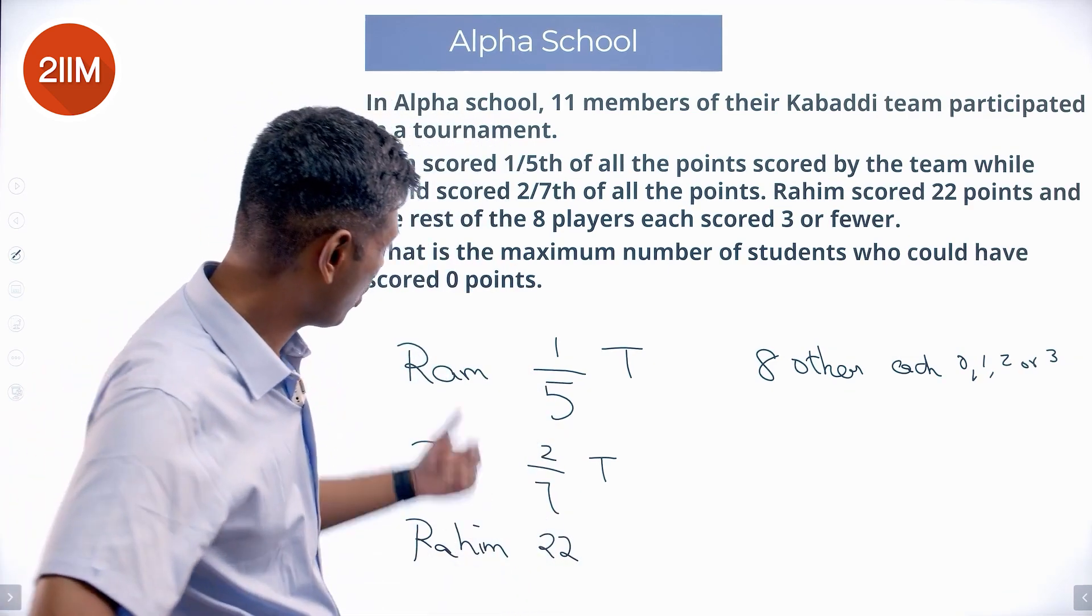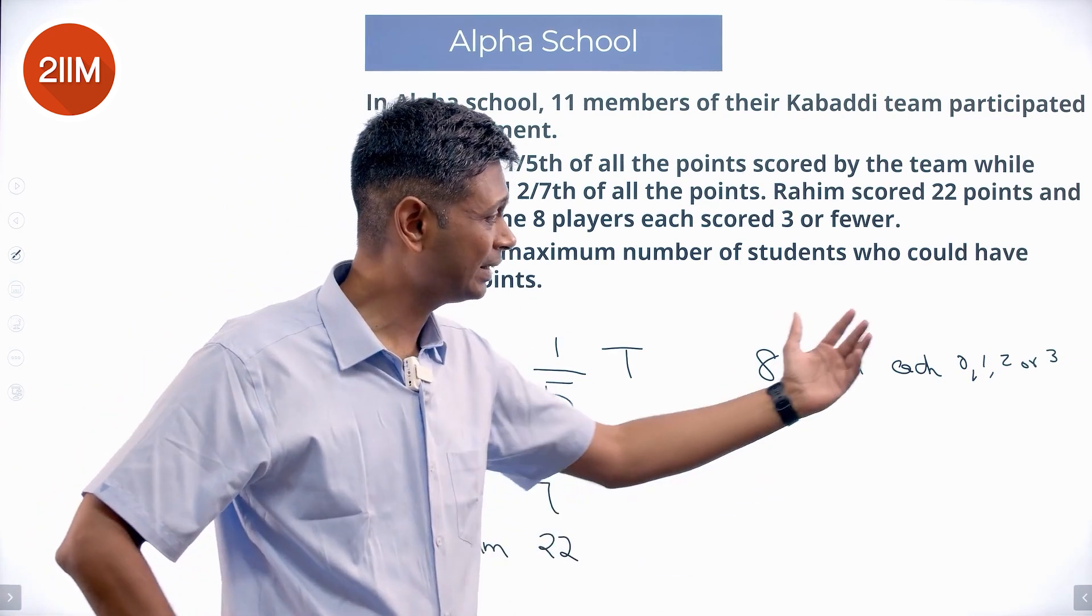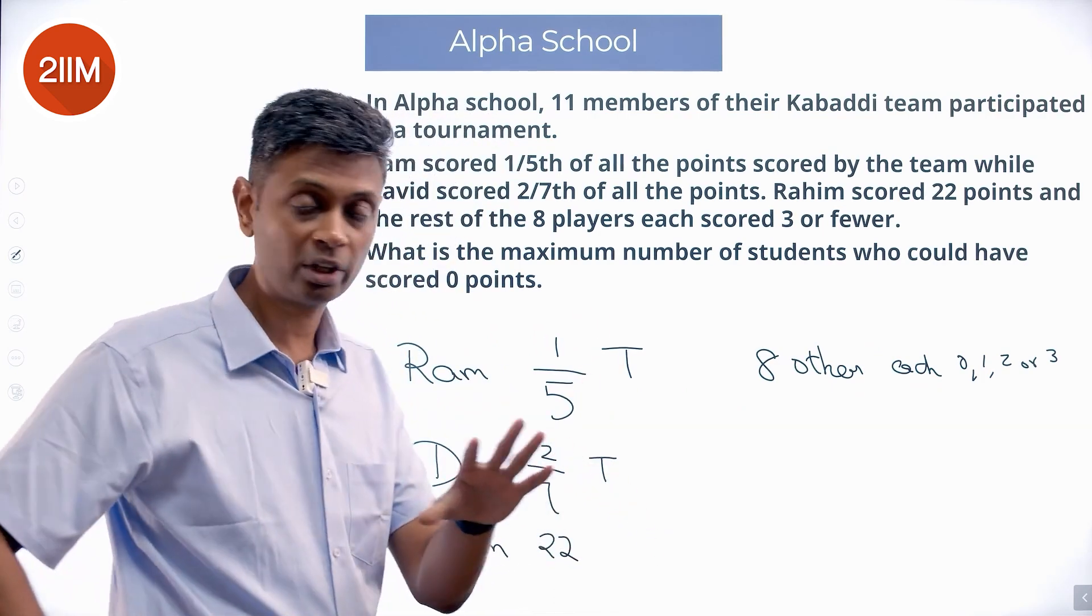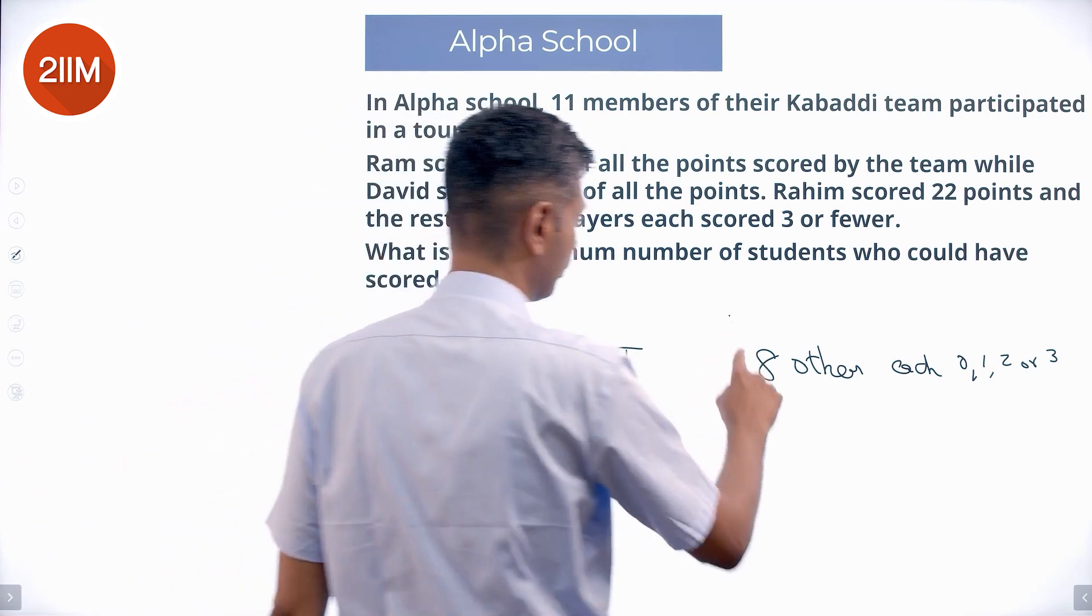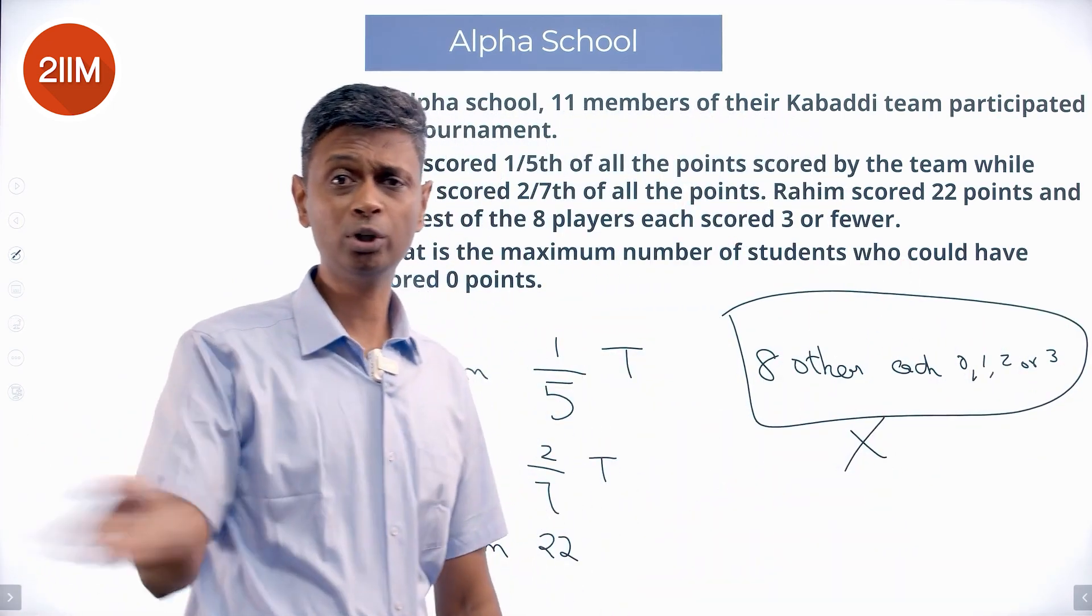One-fifth of total, two-seventh of total, then 22 and then the other eight put together. I'm going to say all of them put together, this other eight put together, I'm going to call it as X. All put together is X.